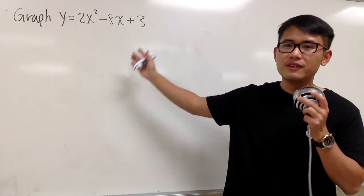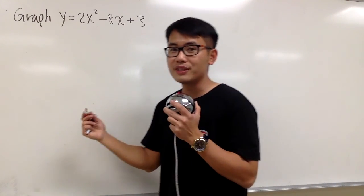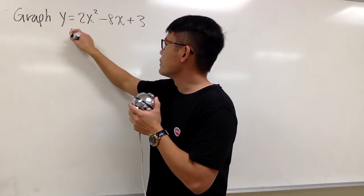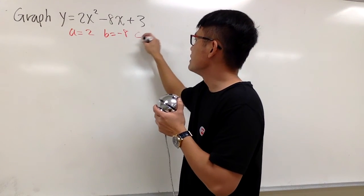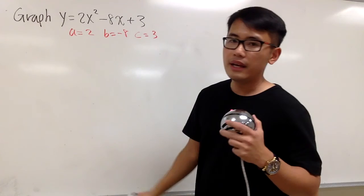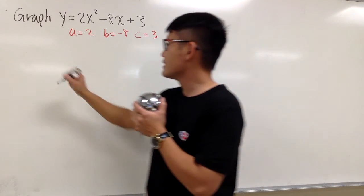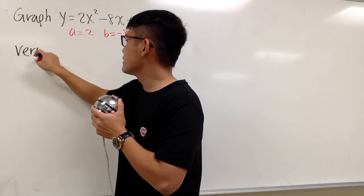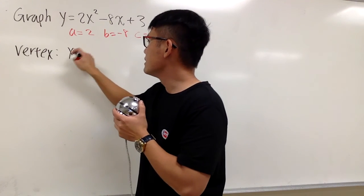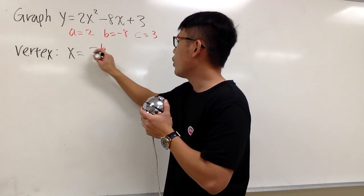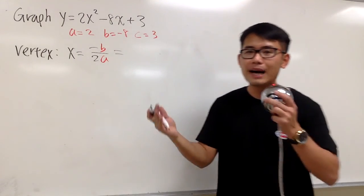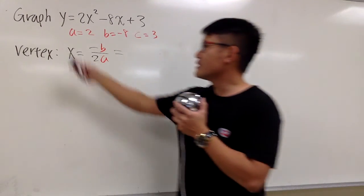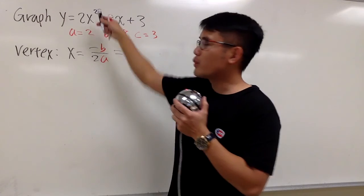Parabola in the standard form, and we have to get the vertex first. Let me just write this down first. a is 2, b is negative 8, and c is 3. And let's work out the vertex formula first. Right here, let's get the vertex, which we know x is equal to negative b over 2a. And this is just the open up or open down situation, because the y is by itself, and we'll have the x being squared, okay?